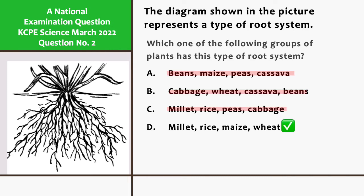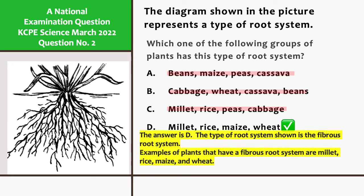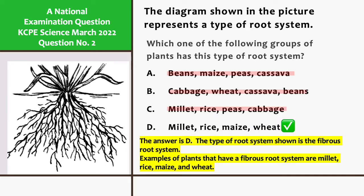The answer is D. The type of root system shown is the fibrous root system. Examples of plants that have a fibrous root system are millet, rice, maize, and wheat.